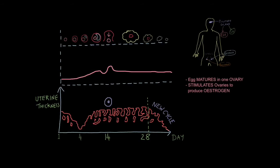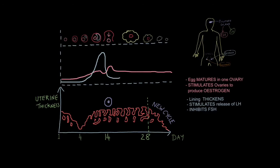FSH stimulates the production of oestrogen from the ovaries. Oestrogen's job is to increase the thickness of the lining; it also stimulates the release of LH and inhibits FSH, causing FSH to go down slightly. Oestrogen starts below FSH, rises as FSH stimulates the ovaries, then drops just before day 14, but there is a second spike between days 14 and 28.